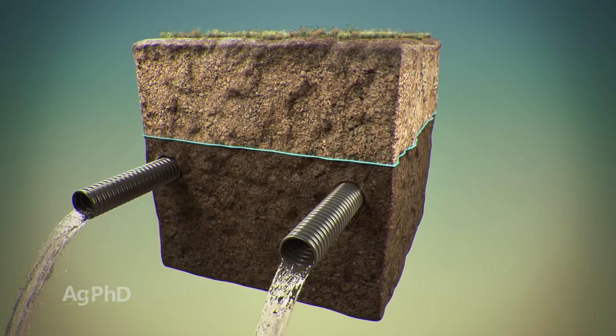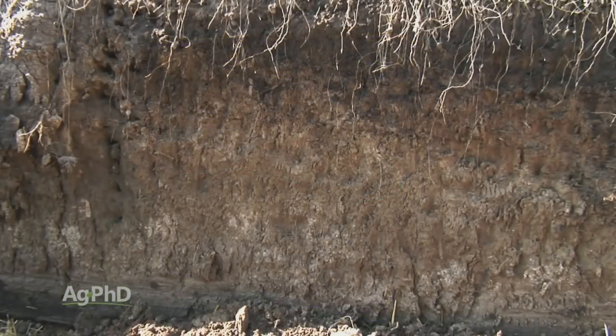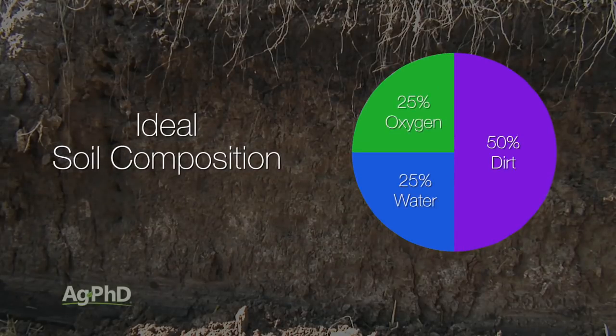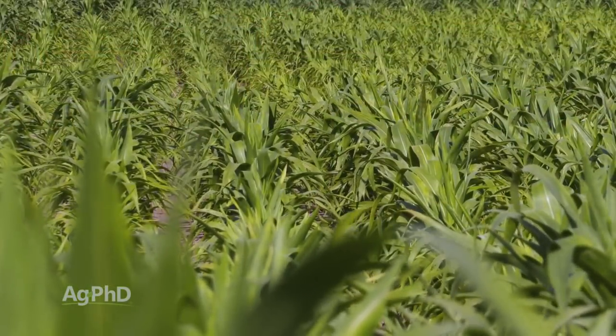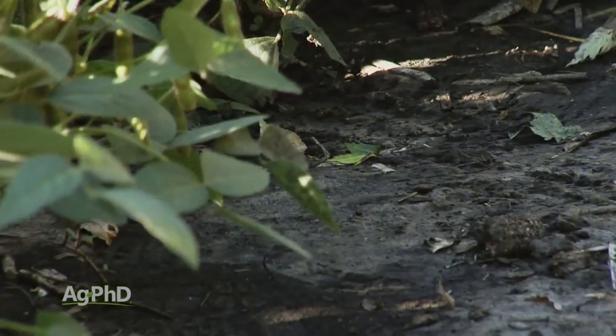If you ever take an Agronomy 101 class, one of the first things they'll talk about is ideal soil composition: roughly 50% dirt, 25% water, and 25% oxygen. The problem when the water table comes up is now you're 50% dirt and 50% water. Where's the oxygen? There isn't any left. Without oxygen, your soil microbes are going to die, and your plant roots are going to die, which leads to poor plant growth or even dead plants. And long-term, that's not good for the soil either.